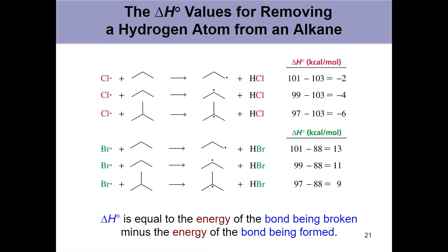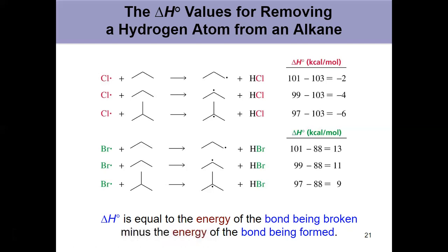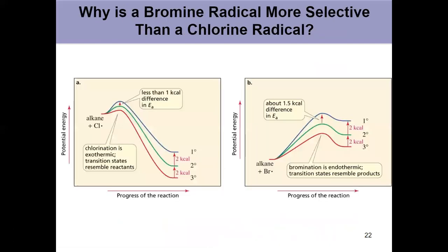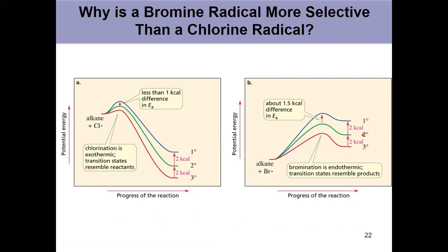So there's a small difference in activation energy going from reactants to the transition state. For bromination, the opposite is true: these are endothermic reactions, so the transition state looks like the products — a larger difference in activation energy. We can see that by looking at the reaction coordinate diagrams. Here for chlorine it's exothermic; for bromine it's endothermic. With a greater energy difference, it's harder to overcome. Any tertiary position has a smaller activation energy overall, be it endothermic or exothermic. But the fact that bromination is endothermic makes that difference much more significant — which is why we get 1 to 82 to 1600 as opposed to 1 to 3.8 to 5.